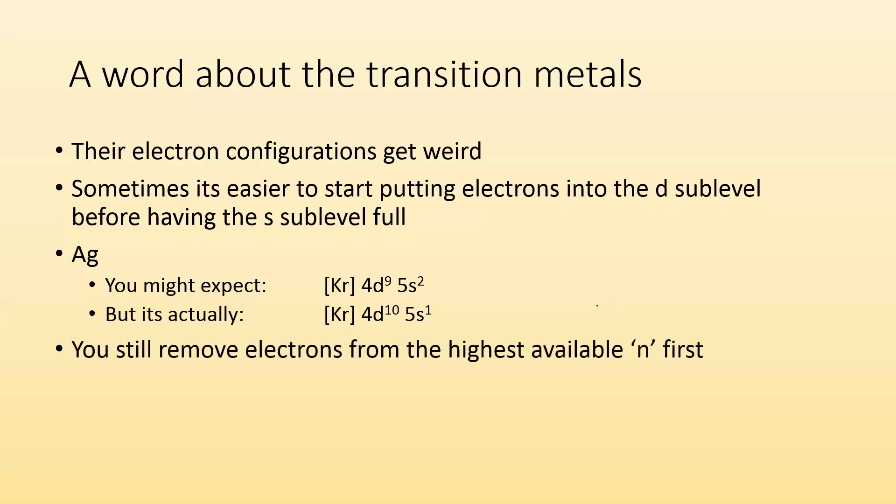So, still, when you're doing and changing their electron configurations, you still remove electrons from the highest available n first. So if I wanted to get, like, Ag plus 1, I'm still going to lose this one electron. Now, you won't get the noble gas configuration because transition metals are difficult. They like to make things difficult, right? You would end up with this configuration for the silver ion, but you still follow the same rules.